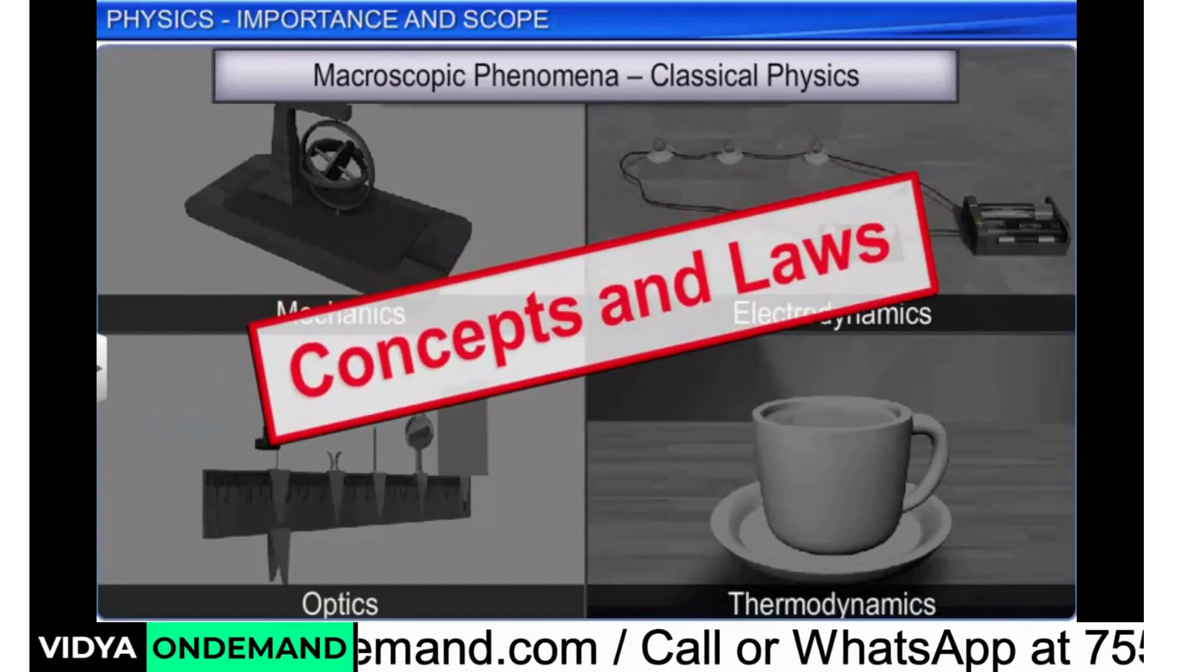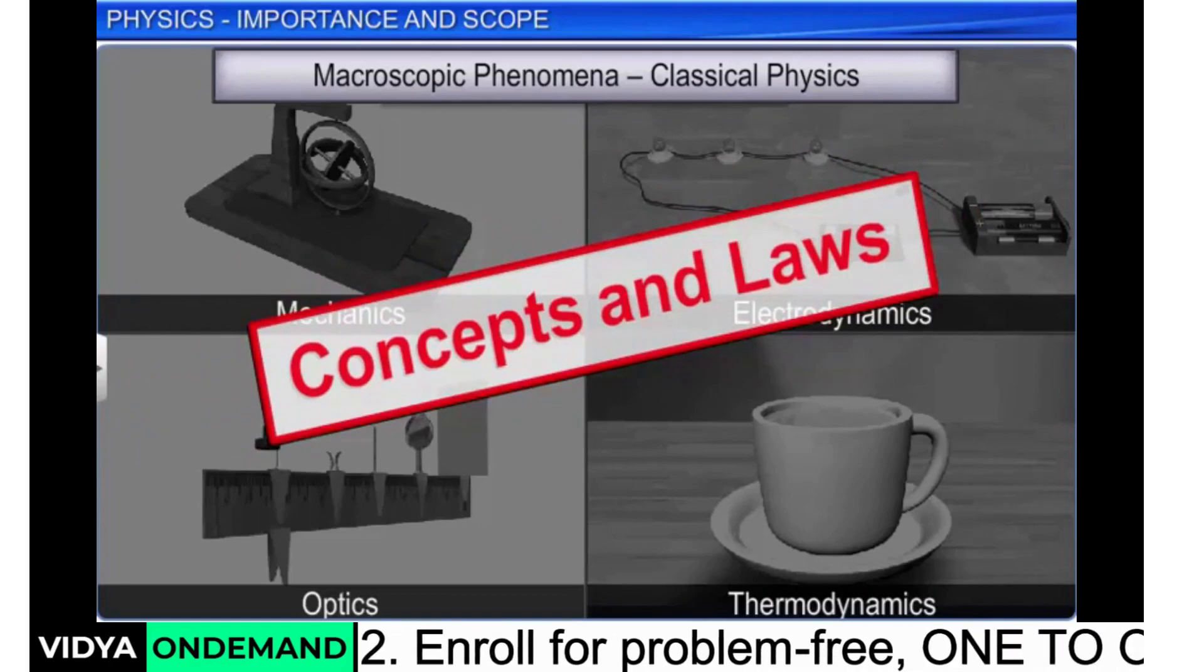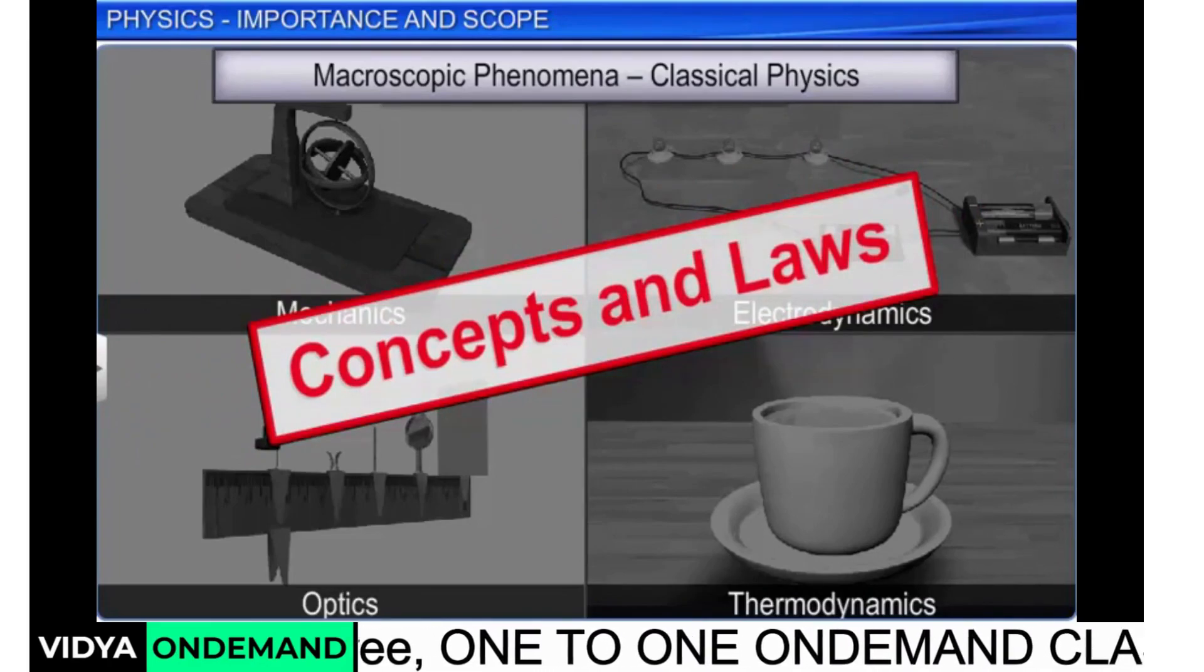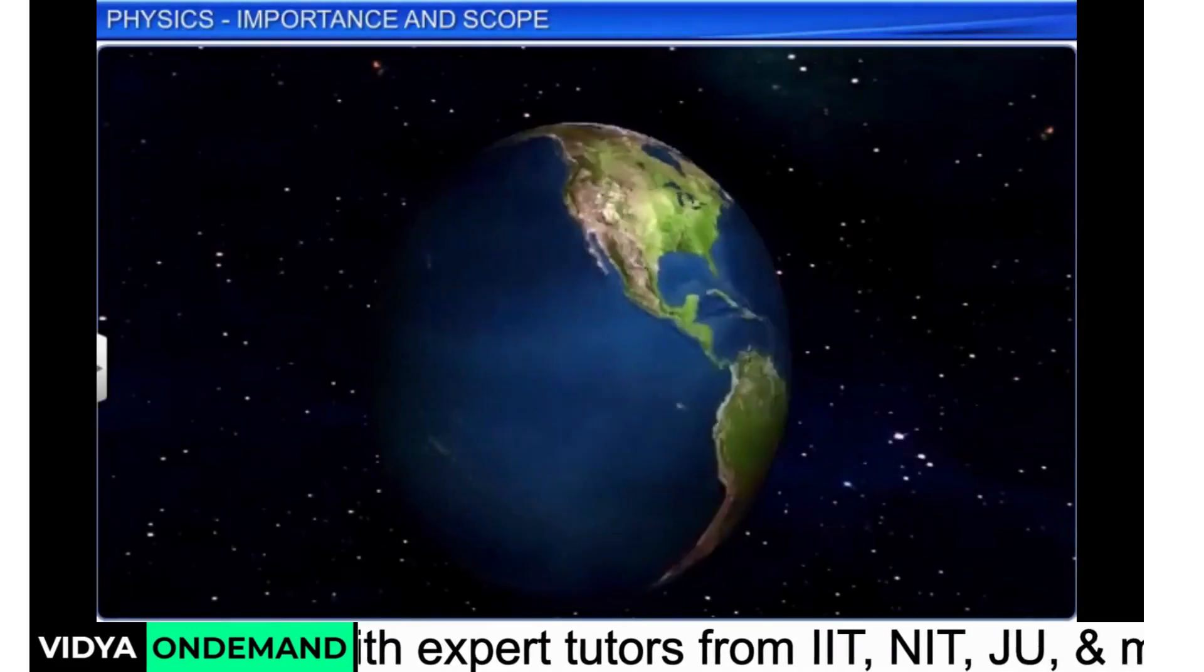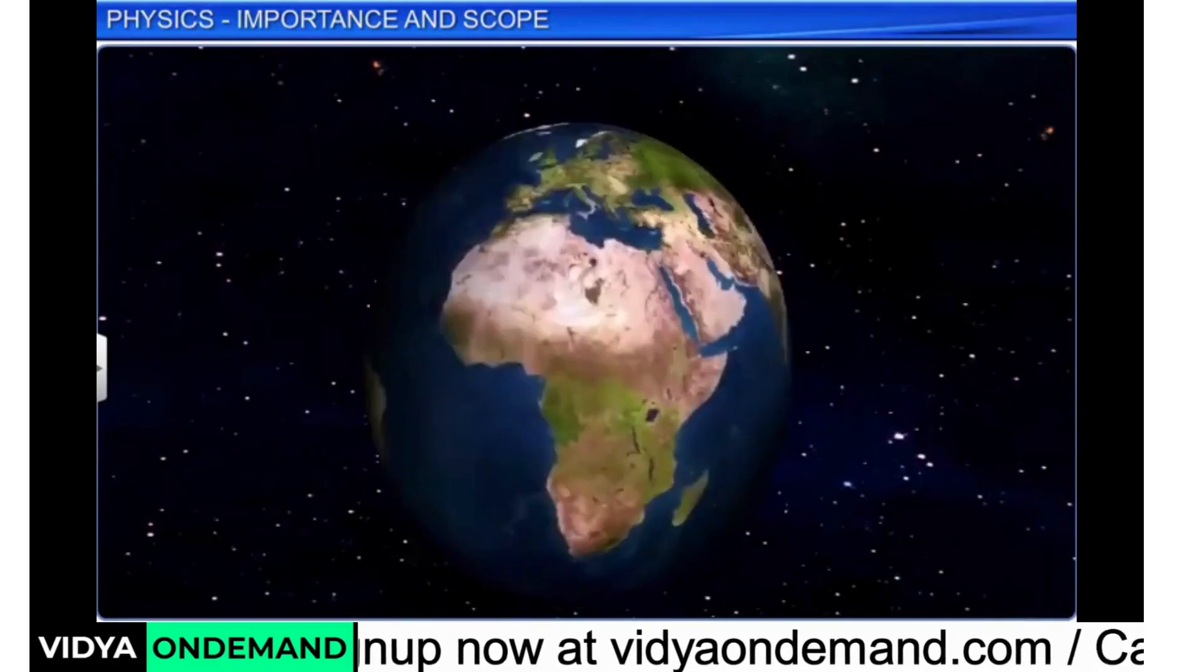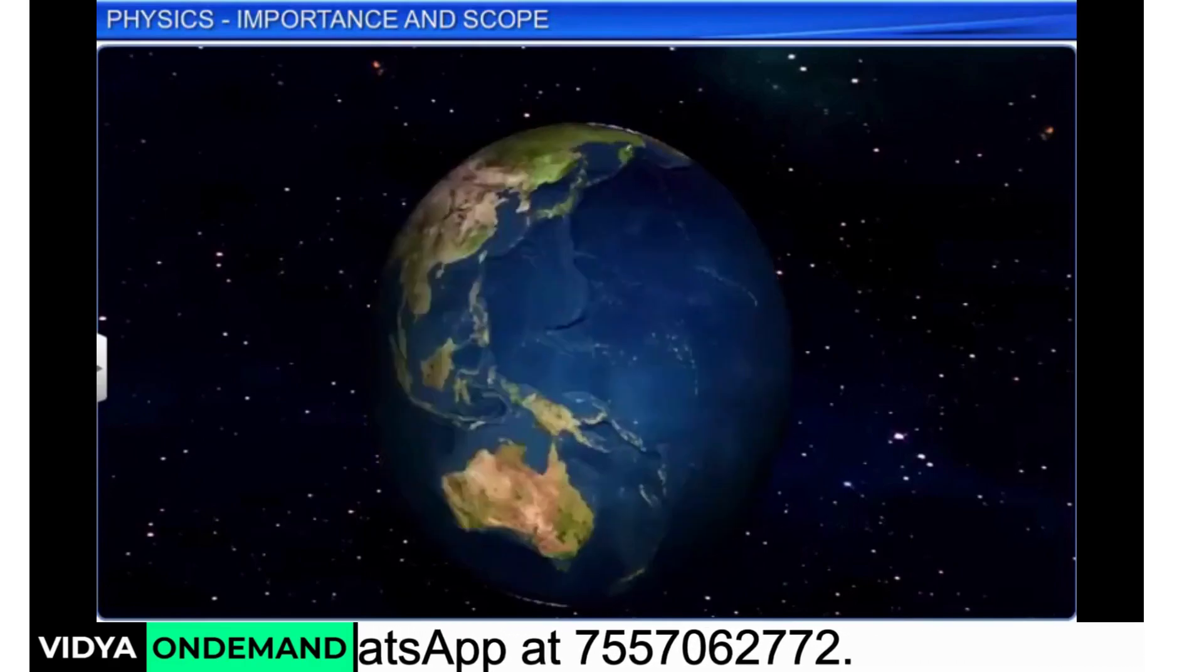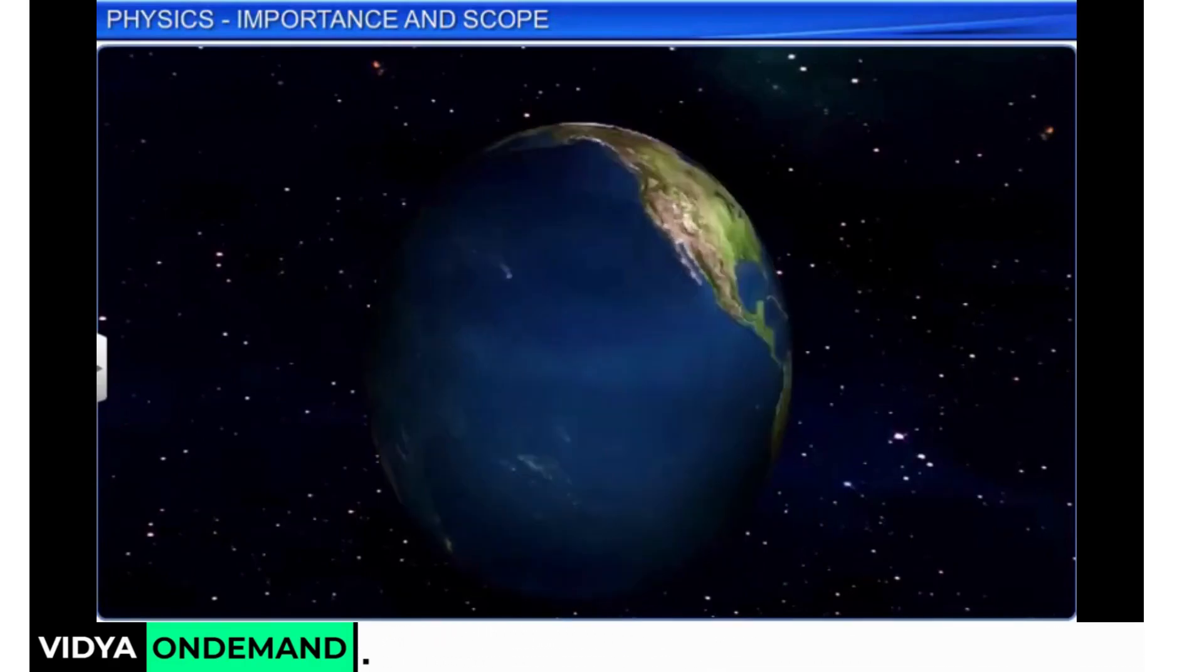In physics, we attempt to explain various physical phenomena in terms of few concepts and laws. We see the physical world as manifestation of some universal laws in different domains and with the required conditions applicable as per the contexts.